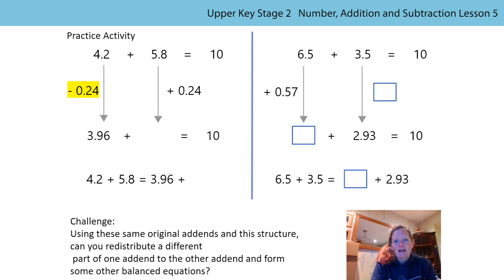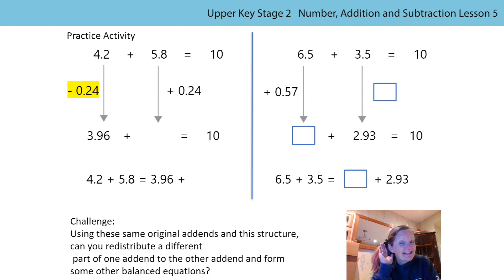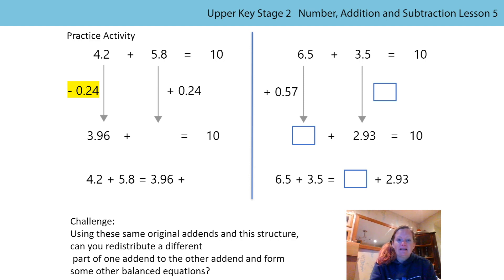2 tenths add 8 tenths is? 2 tenths add 8 tenths is 10 tenths. And 10 tenths is equivalent to one whole. So that means we have 5 wholes and another whole and then these 4 hundredths left over.